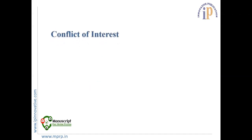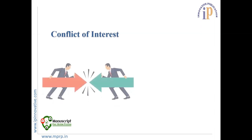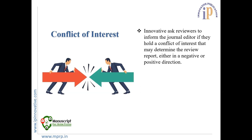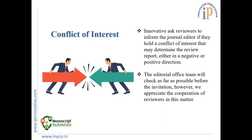Conflict of Interest: IP Innovative asks reviewers to inform the journal editor if they hold a conflict of interest that could influence the review report either in a negative or positive direction. Generally, the editorial office team will check such issues as soon as possible, and we really appreciate the cooperation of reviewers in this matter.